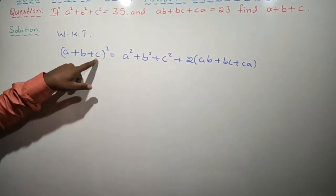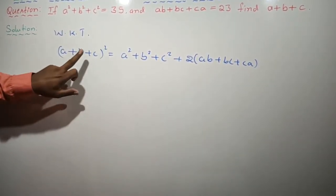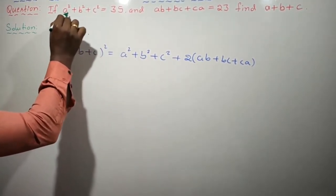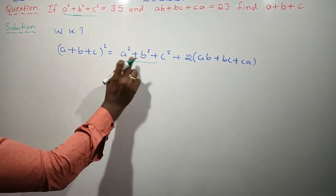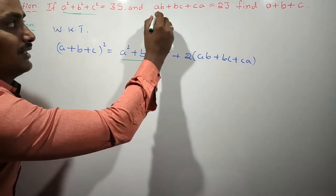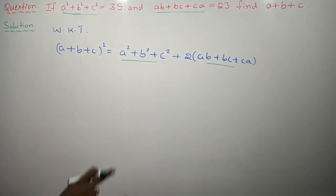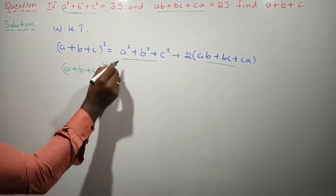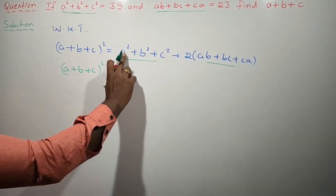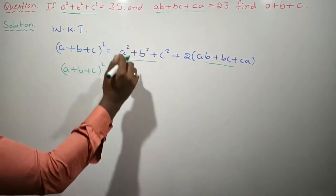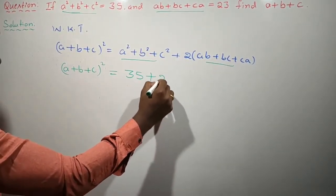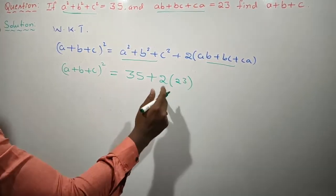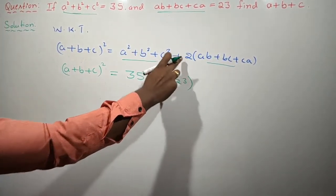Now, a plus b plus c whole squared is equal — but I don't want the whole square, I want only the value of a plus b plus c. Look at the given data: a squared plus b squared plus c squared is 35. Shall I substitute? Instead of a squared plus b squared plus c squared, plus 2 into ab plus bc plus ca which equals 23, shall I substitute, children? Very easy.